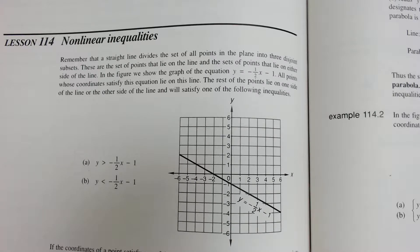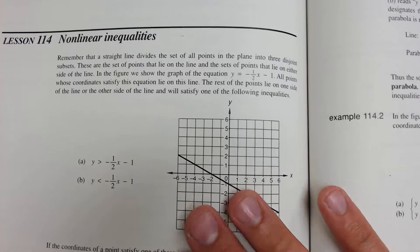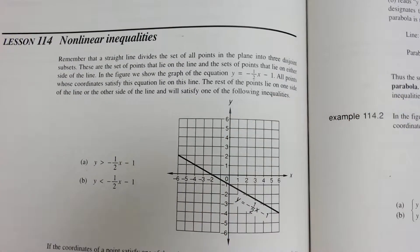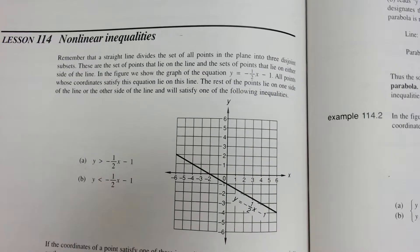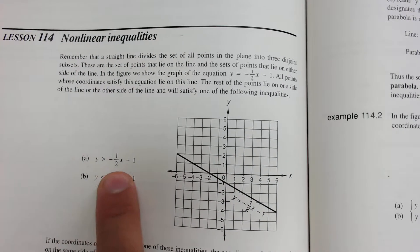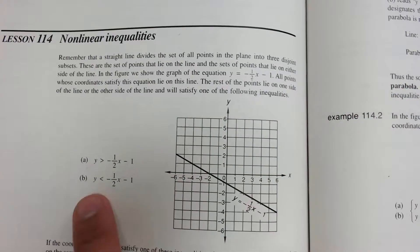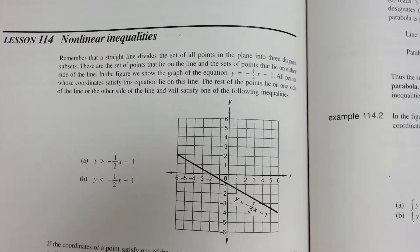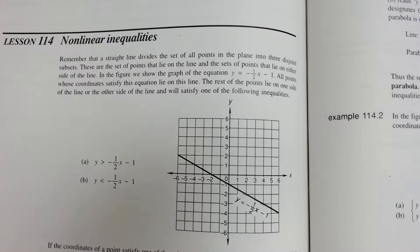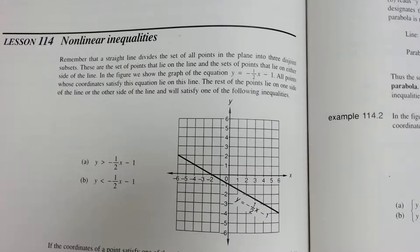So what we mean by non-linear inequalities is before we've been doing these inequality problems where you'd have to shade a region of the graph that was represented by this equation. For example, y greater than the line would be all the portions above the line, y being less than the line would be all the portions below the line, and then non-linear just means not a straight line.